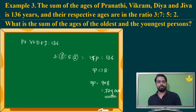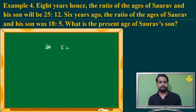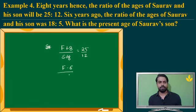As simple as that question is. Let's go to the next one. 8 years hence, the ratio of the ages of father and son will be: F plus 8 by S plus 8 is equal to 25 is to 12. 6 years ago, F minus 6 by S minus 6 was 18 is to 5.